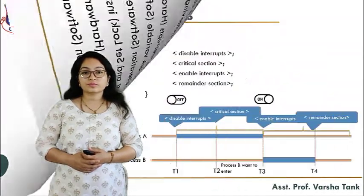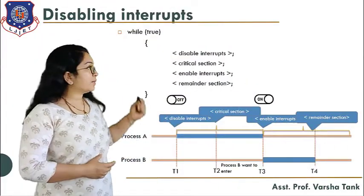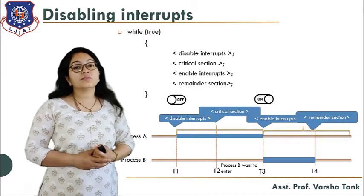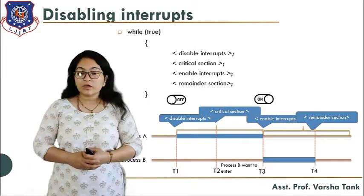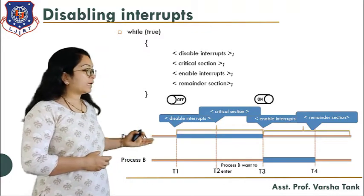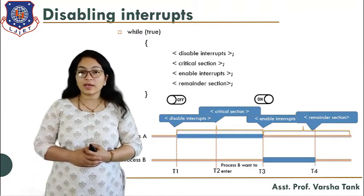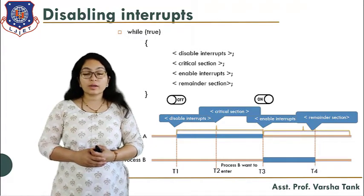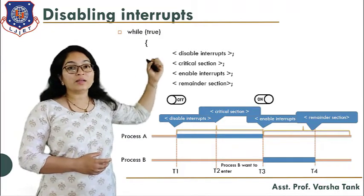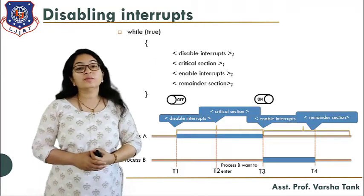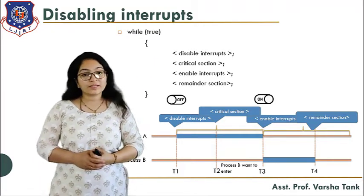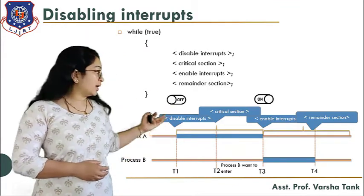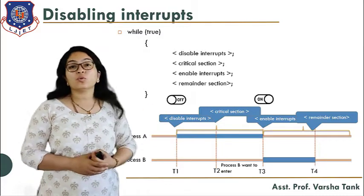We started with disabling interrupts. We saw the algorithm and the corresponding figure. For example, processes A and B both want to enter the critical section. When the while condition is true — meaning the process wants to enter the critical section — it disables the interrupt.